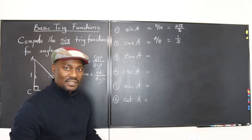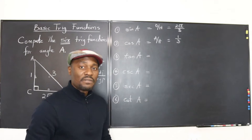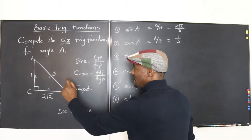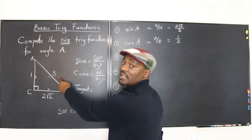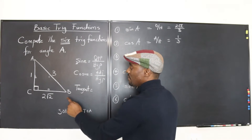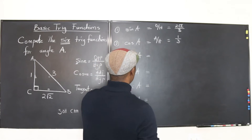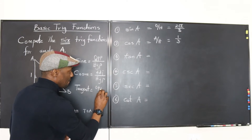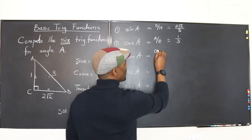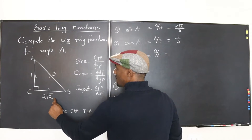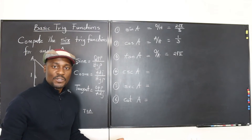The third function is tangent. By definition, the tangent of an angle is the ratio of the opposite side to the adjacent side — you don't involve the hypotenuse at all; it's just the ratio of the two legs. So the tangent of angle A is opposite over adjacent. That gives us 2√2 over 1, which simplifies to just 2√2.